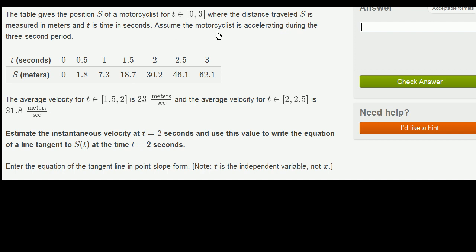Assume the motorcyclist is accelerating during the 3-second period. They give us the information - time between 0 and 3 seconds, and here we have the corresponding distance that you can view as a function of time.